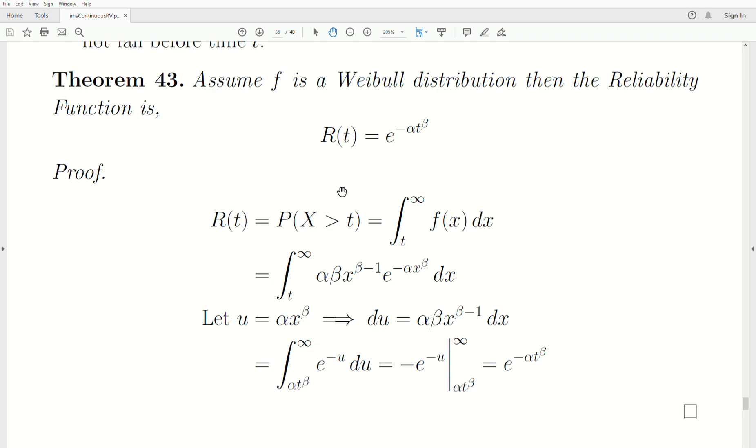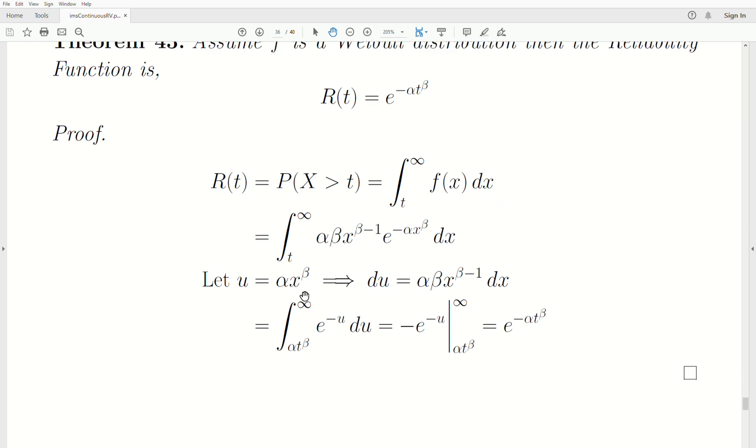Let's prove it. R of t is the probability that we're greater than t. Since x is a continuous random variable, we could technically put an equal sign there, but traditionally you say x greater than t. We integrate the density from t to infinity. Plug in the density, do the standard variable change where we look at that exponent, and we get du is equal to this expression, substitute everything in, take the anti-derivative, and then we evaluate it at these two numbers here. Plug in infinity, it goes to zero, and then minus or minus becomes a plus, plug in alpha t to the beta, and you get this expression, which is what we wanted to show.